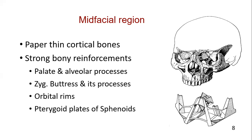For example, the palate and alveolar process, the zygomatic buttress and its processes, orbital rims, and pterygoid plates of the sphenoid bones are very strong components. This gives the concept of the facial buttress system, which we will discuss in the next slide.